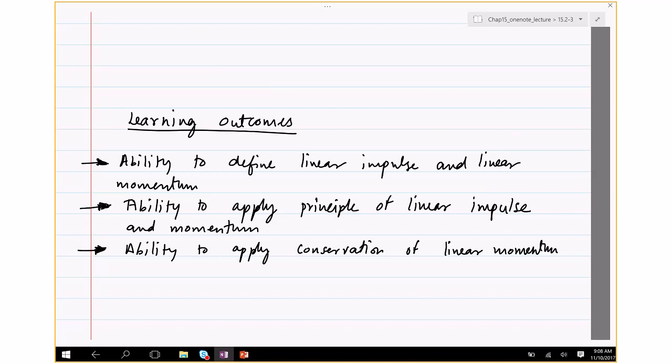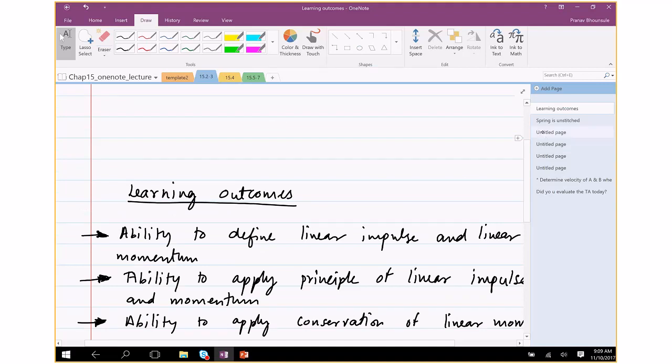Impulse momentum, okay. And then the other thing is conservation of linear momentum. So we've done conservation of energy. This is slightly different, it's called conservation of momentum. So I'll give a brief overview of what is the principle of angular impulse and momentum, and then we start solving some problems. We are only doing particles now. In the next section, next chapter, it's going to be rigid bodies.